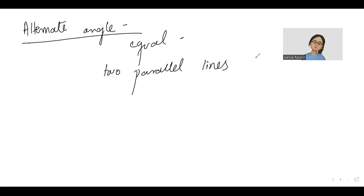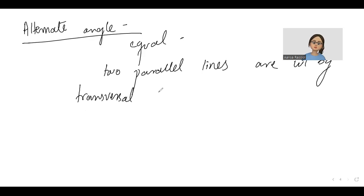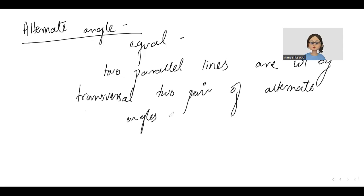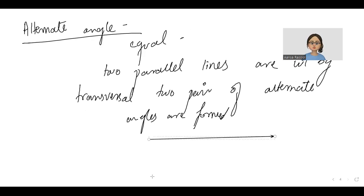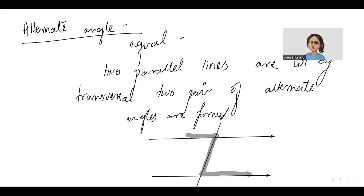When two parallel lines are cut by a transversal, two pairs of alternate angles are formed. So this will be cut by a transversal. How alternates are formed? There is a Z-shape formed. So the angles at the corners of this Z-shape are basically equal. So angle A is equal to angle B.